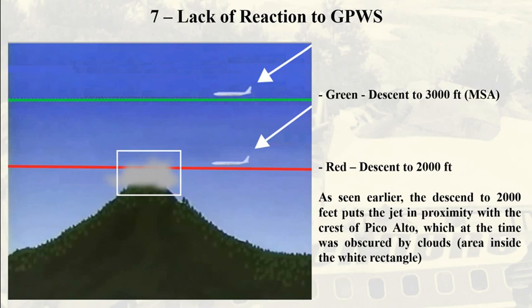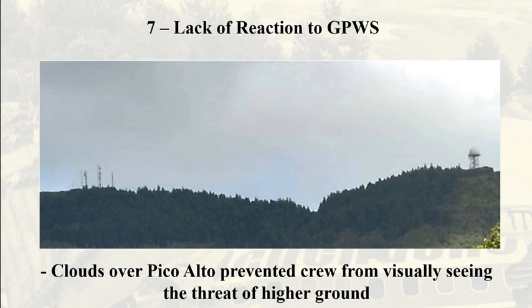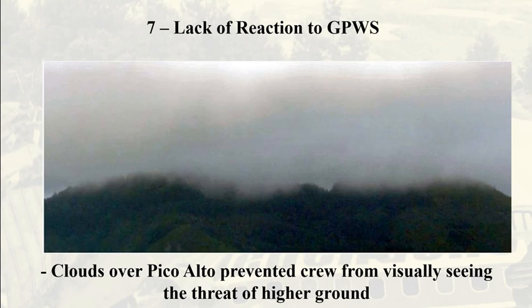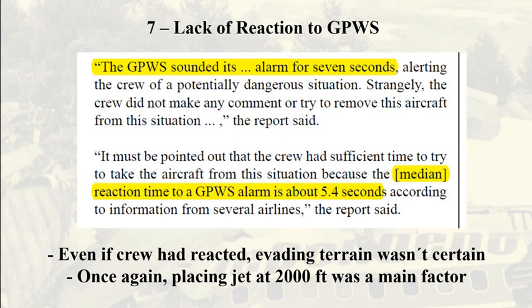Another factor was the presence of clouds over Pico Alto, which prevented the crew from visually detecting the terrain ahead when the alarm sounded. Back to the previous altitude schematic: by descending to 2,000 feet, the jet was placed close to the edge of Pico Alto, which was covered by clouds — the area inside the white rectangle. Here we see a picture of Pico Alto and a close-up of the impact area, and then the same area pictured a few hours later with clouds covering the crest. Inside the cockpit, this is what the pilots of Flight 1851 would have been seeing in the final seconds before impact — unable to use visual references, they would not see the crest of the mountain in front of them. The report notes the GPWS sounded for 7 seconds and the median reaction time to such an alarm is 5.4 seconds, so the crew had time to react.